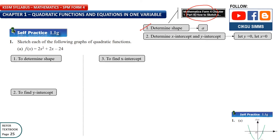The first step is to determine the shape. You need to look at the value of A. If the value of A is positive, the graph opens upward. If the value of A is negative, the graph opens downward. Then you need to find the x-intercept by letting y equal to zero, and the y-intercept by letting x equal to zero.